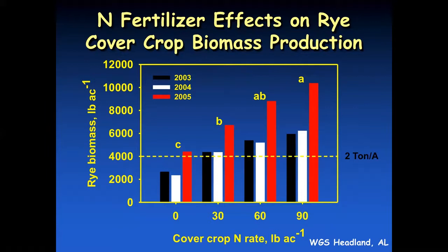My rule of thumb is you want to have at least two tons per acre of cover crop biomass out there to make it worthwhile. In this slide showing fertilization of cereal rye, with zero nitrogen, one year barely made it over two tons per acre. Adding just 30 pounds of nitrogen per acre tremendously boosted the biomass produced. As you kept increasing nitrogen, you got more biomass — and the biggest bang for the buck is that first 30 pounds of nitrogen to really get it going.